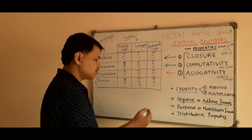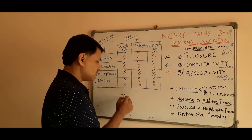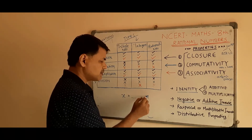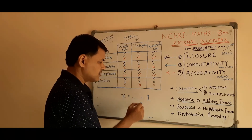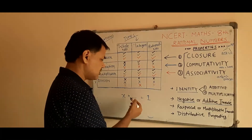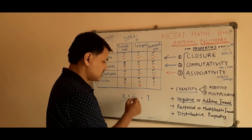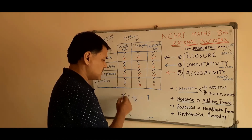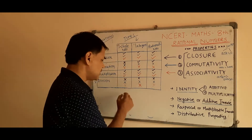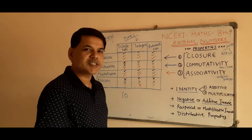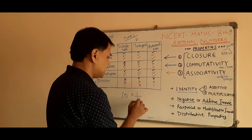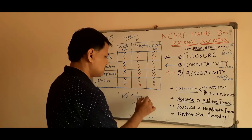The same concept applies for multiplicative inverse, also called reciprocal. Here we check: for a given number, what do we multiply it by so the result becomes one? For a number x, the multiplicative inverse is 1 by x, so that x times (1/x) equals 1. For example, the multiplicative inverse of 10 is 1 by 10, because 10 times (1/10) equals 1.